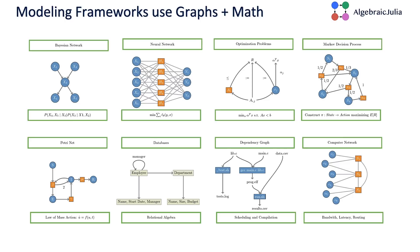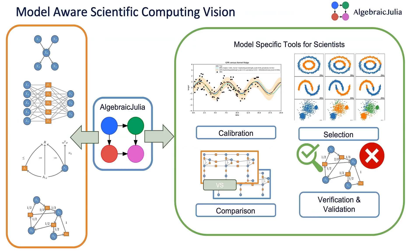There are lots of modeling frameworks, and they all kind of use graphs plus a mathematical interpretation of that graph. Like Bayesian networks from probability theory, neural nets, we already talked about Petri nets, databases use relational algebra, optimization problems can be expressed this way, Markov decision processes, dependency resolution, make files are a type of modeling framework.